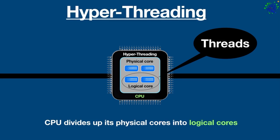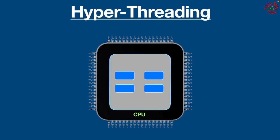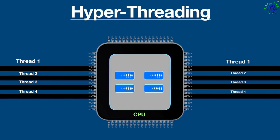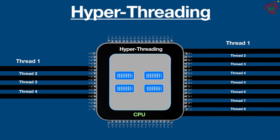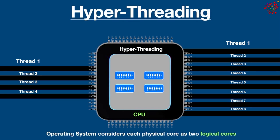These logical cores are treated as if they are actually physical cores by the operating system, and they are also called threads. For example, here we have a quad-core processor, which means it has four processing units on a single chip that can run programs much faster. But if we want to further increase the speed, this is where hyper-threading comes into play. With this technology, the operating system considers each physical core as two logical cores, and two logical cores can work through tasks more efficiently than a traditional single-threaded core.